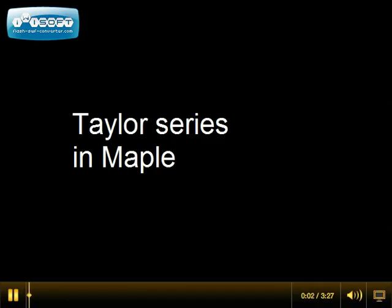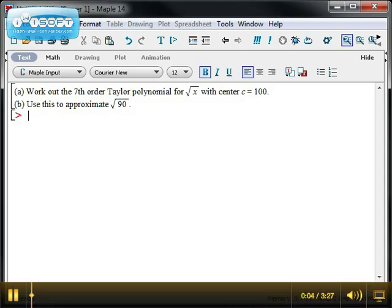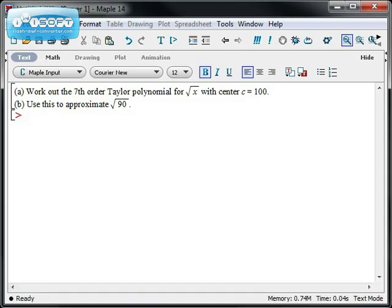Let's take a look at how we would compute Taylor series in Maple. Suppose we had to work out the 7th order Taylor polynomial for the square root of x with a center of 100, and then use it to approximate what the square root of 90 is.